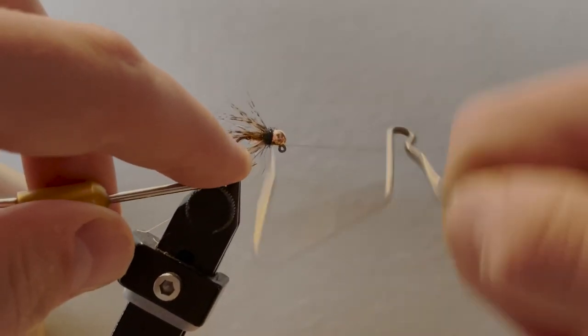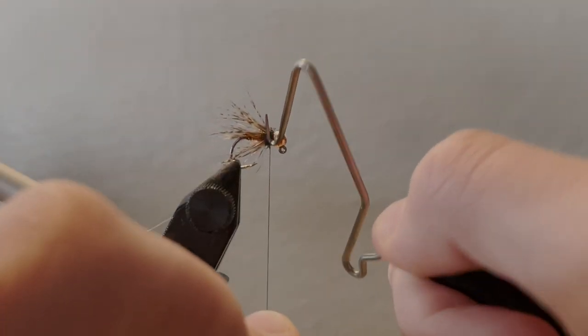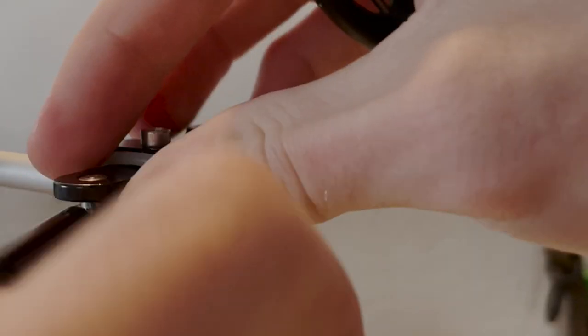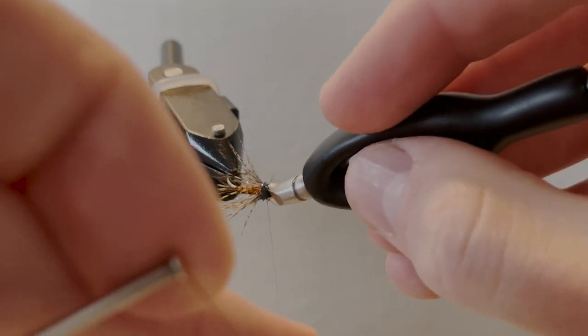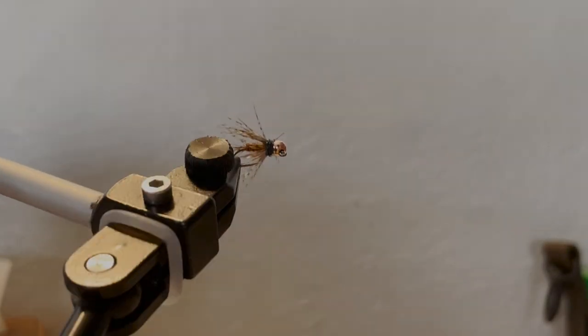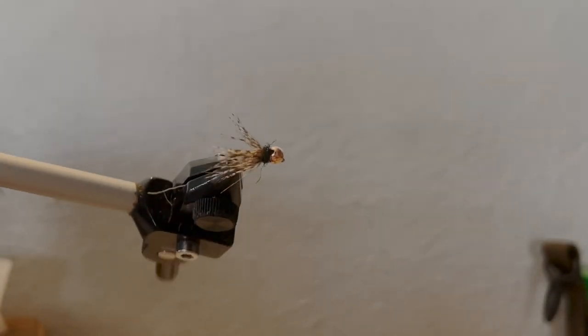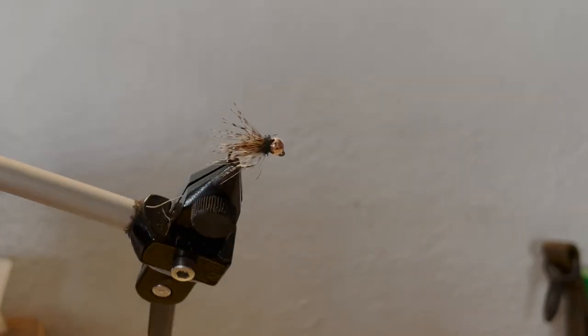Grab your whip finisher, use it to do a four to five turn whip finish, and snip it off. And boom, that's your finished October caddis—super buggy, super simple, fish love it, and it is a great dry dropper. Good for you.